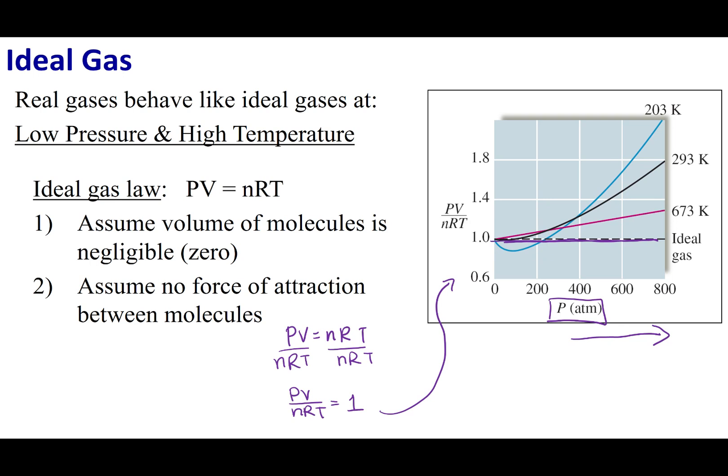What we can also look at is temperature. What I have is 203, 293, and 673. So I'm getting progressively hotter and hotter temperatures. And what you will notice is the hotter I get, or the higher temperature I'm at, the closer I am to this ideal gas behavior.